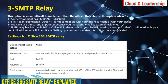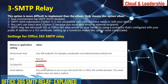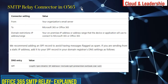Setting up a connector makes this option more complicated. For the SMTP relay settings: you can enter your MX record as the server or host name in your application. Port would be 25, TLS should be enabled, and your devices must support TLS. You can use any email address from one of your Microsoft 365 verified domains.